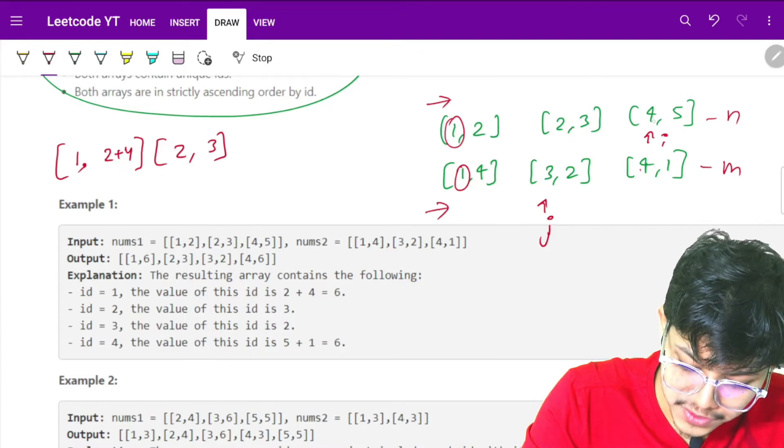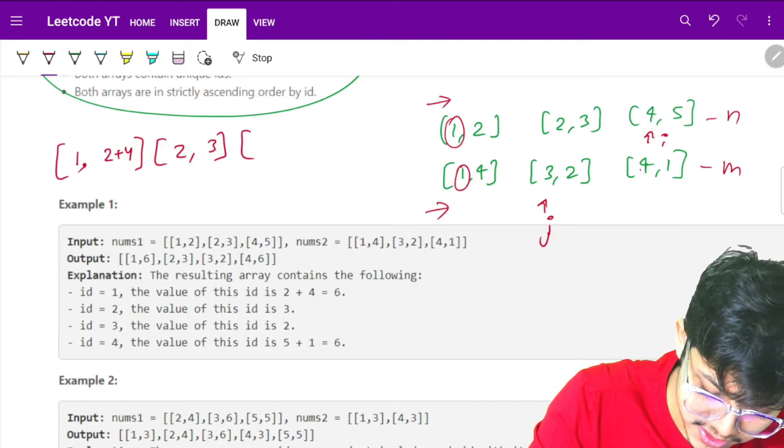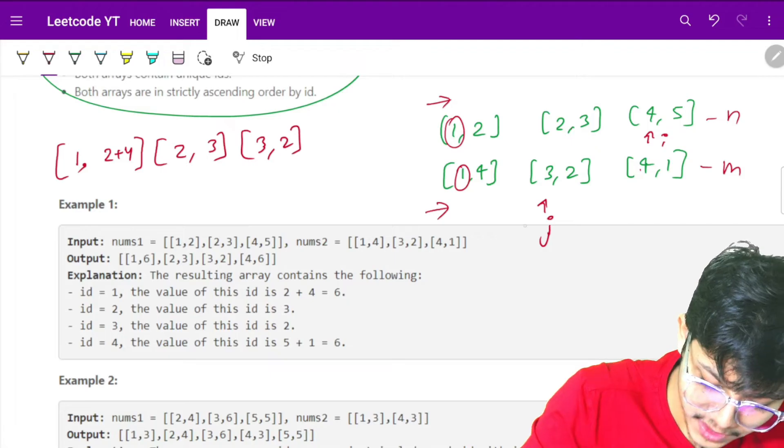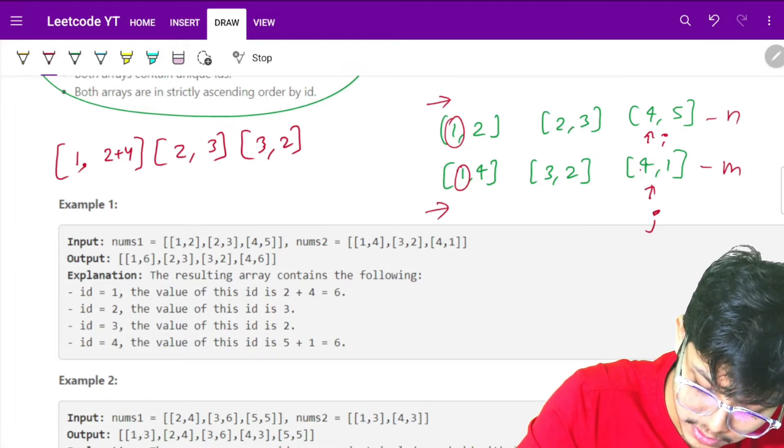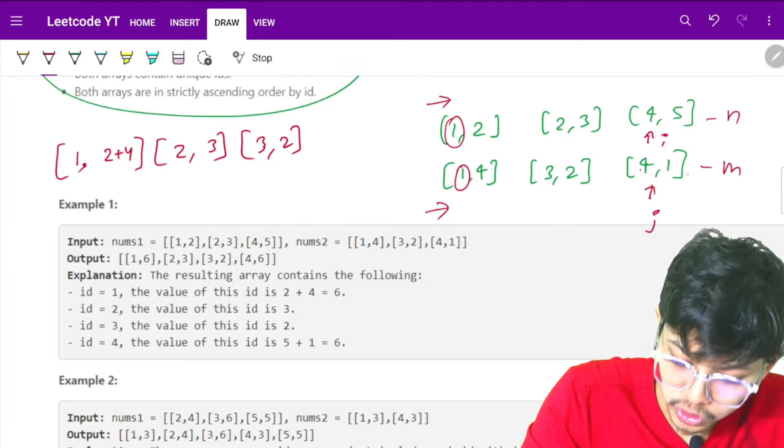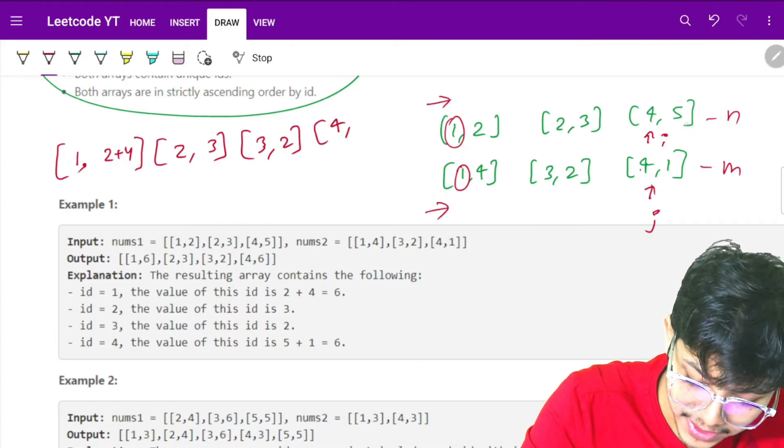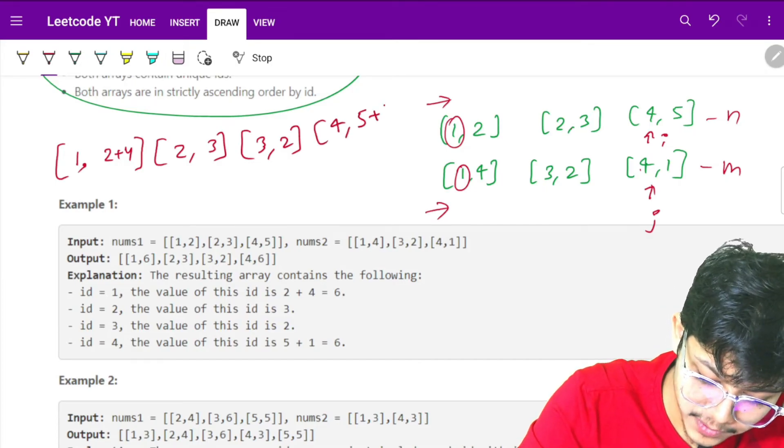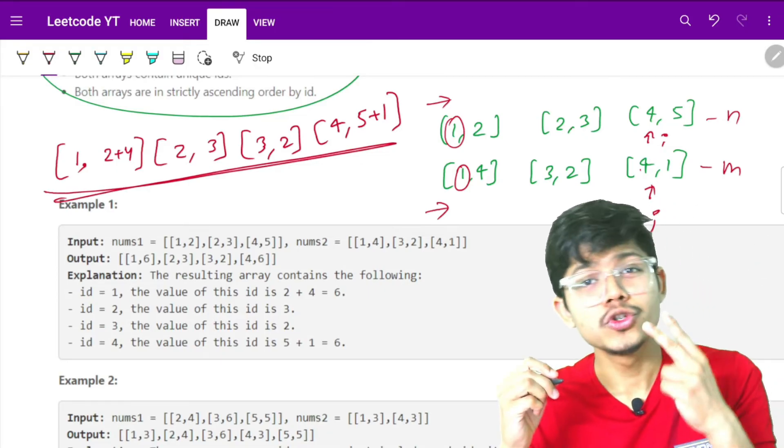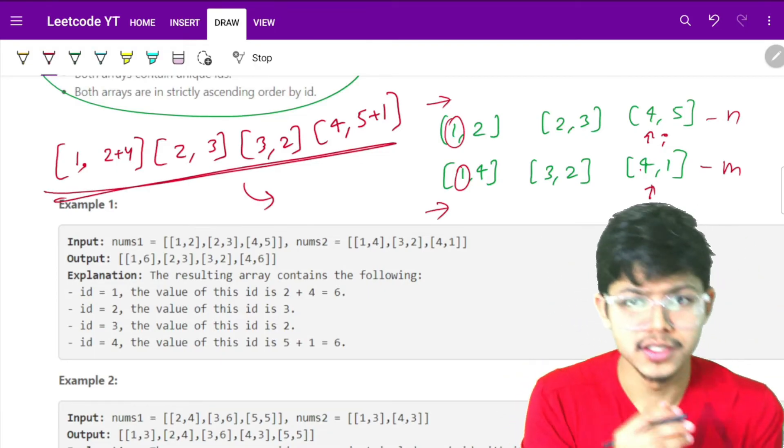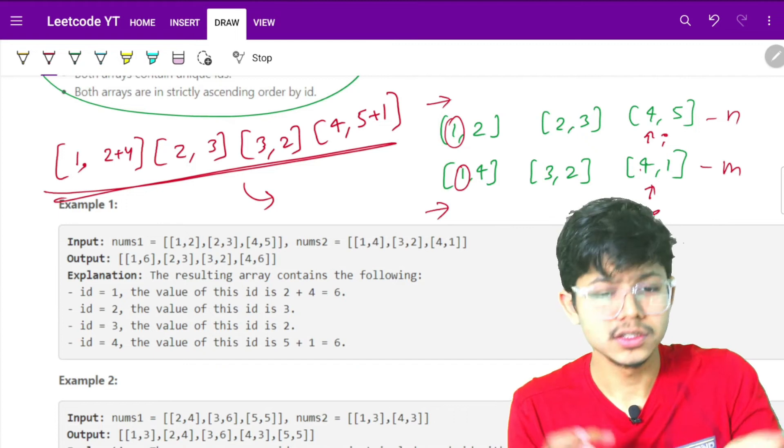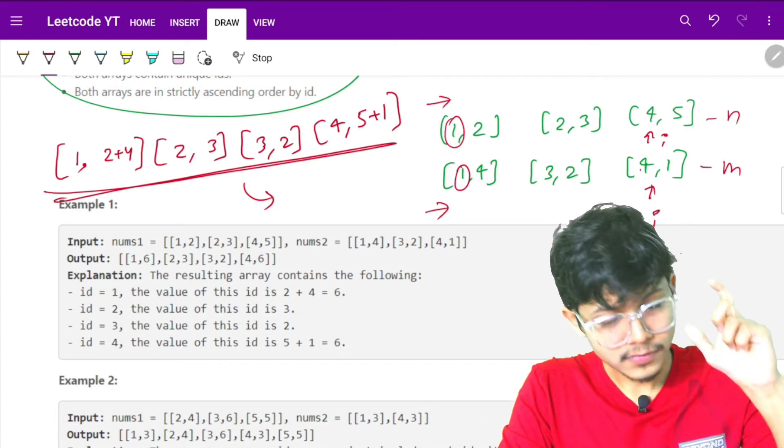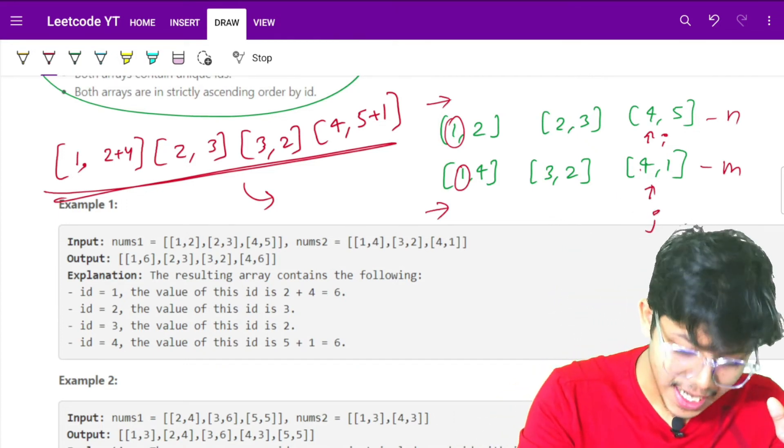Now if ID of j is less, I add ID of j and move j ahead. If both IDs are the same, I have the same ID, add those values which is 5 plus 1. Using these two pointers, I can return my final 2D vector.